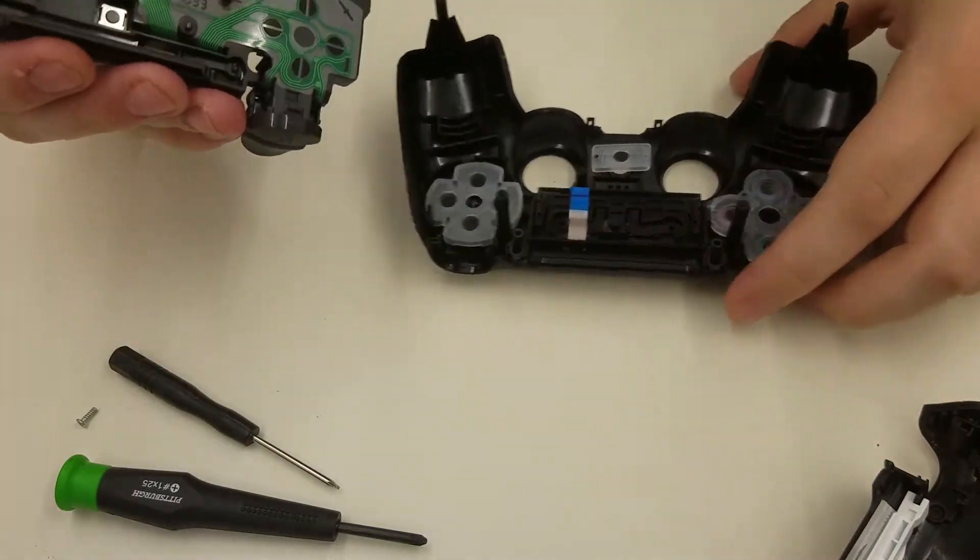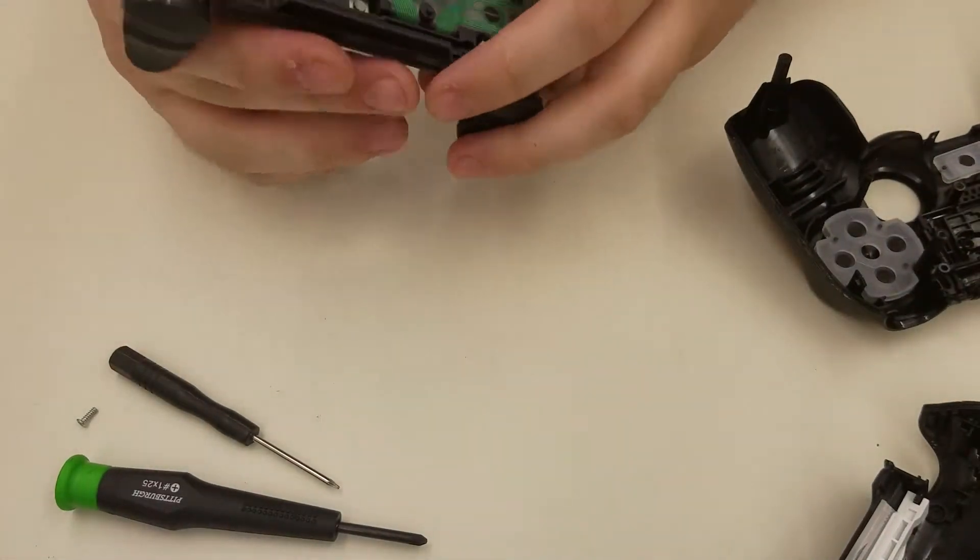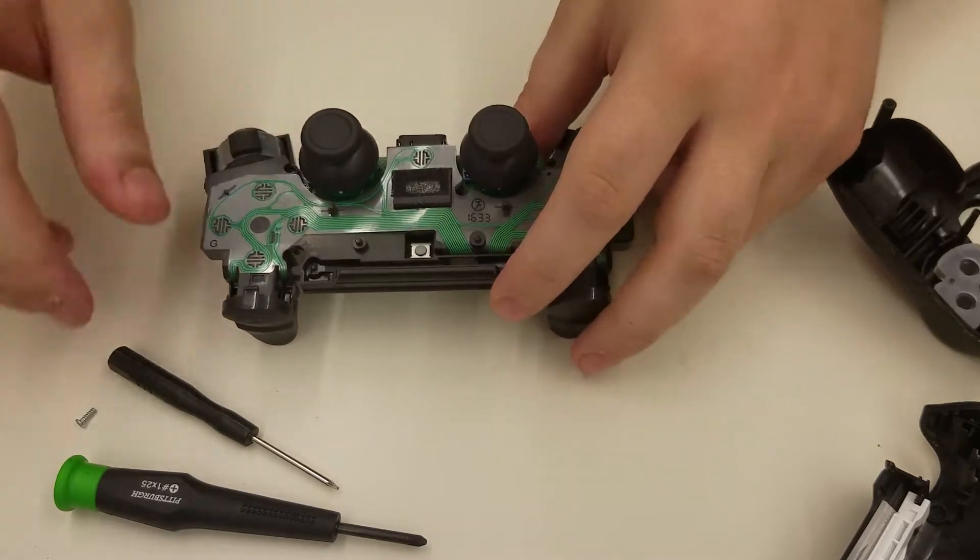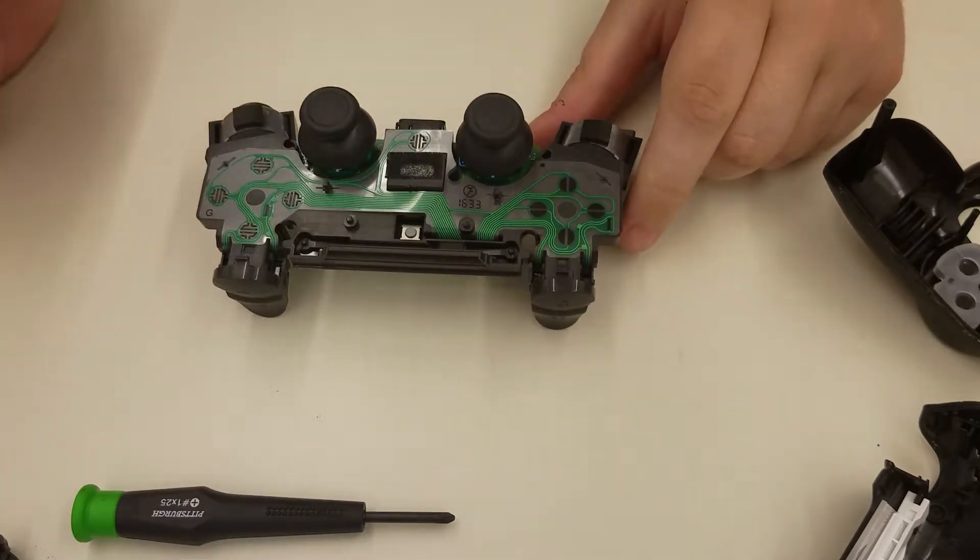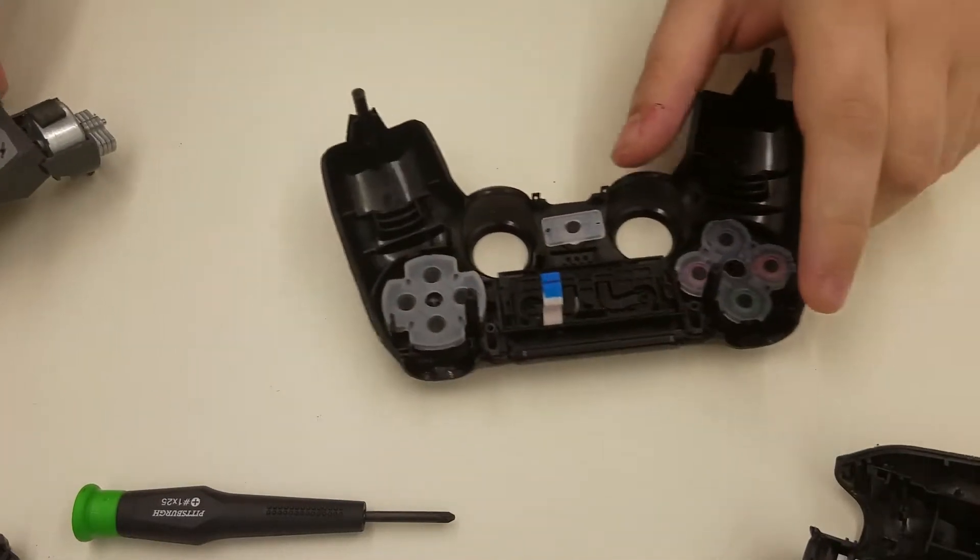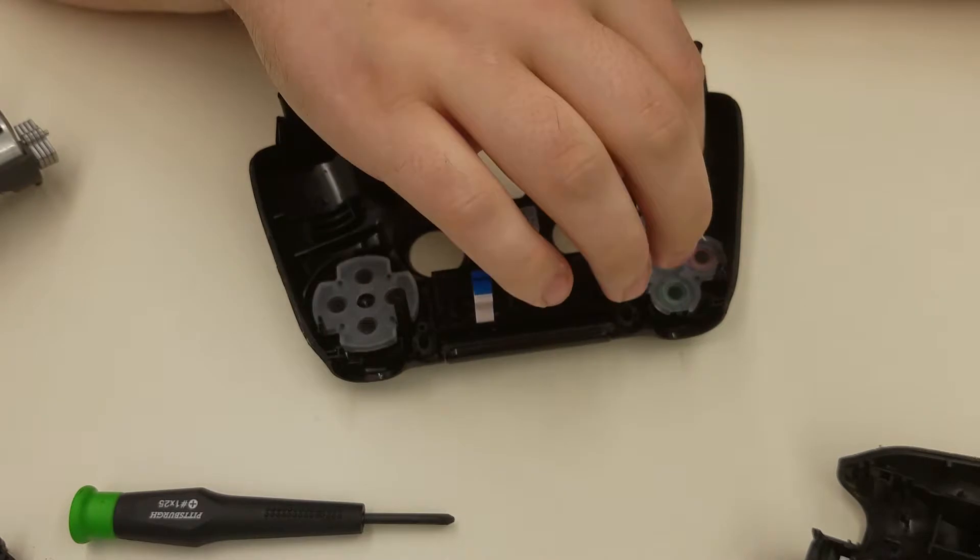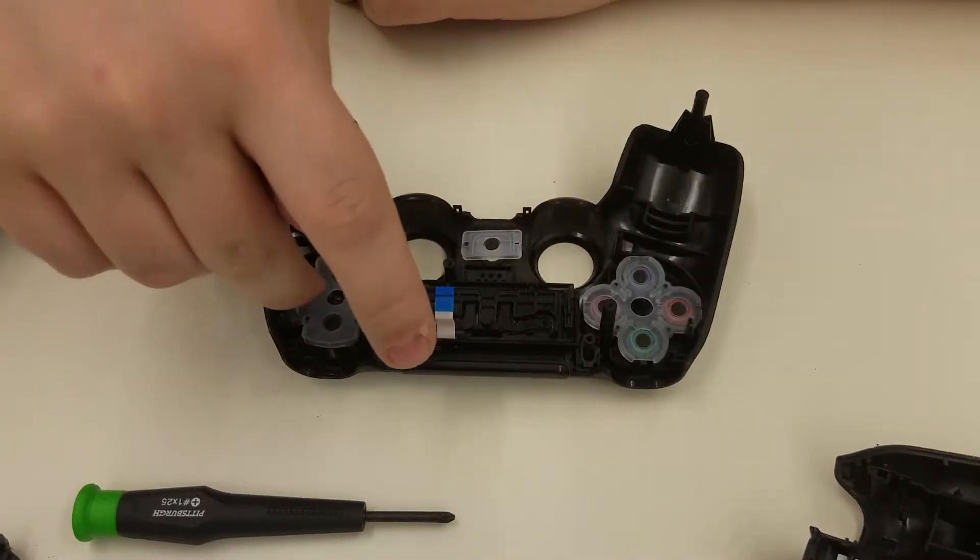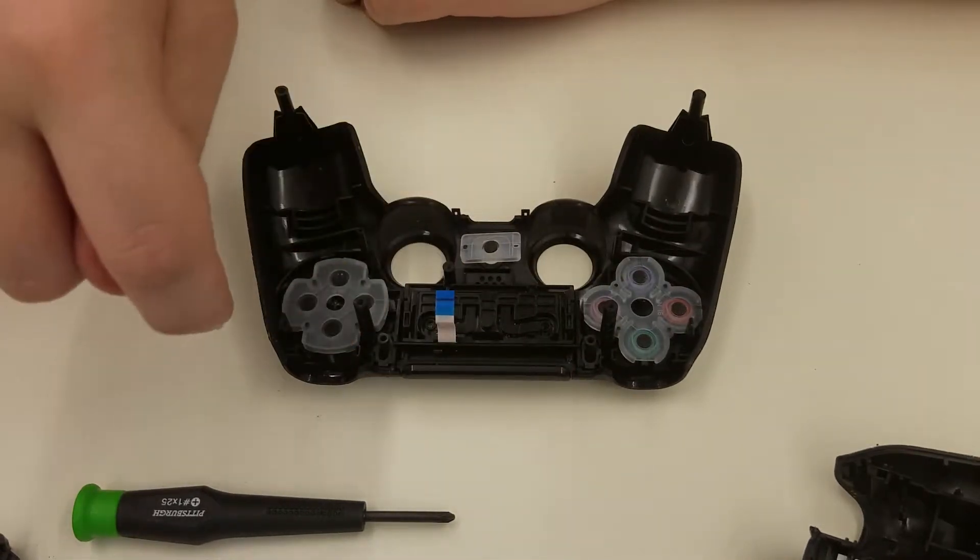So here's the main circuit board. Now we've got it completely dissected. Here's the thumbsticks, the old button, and here are the buttons, the face buttons and the d-pad. And here's the PlayStation button.